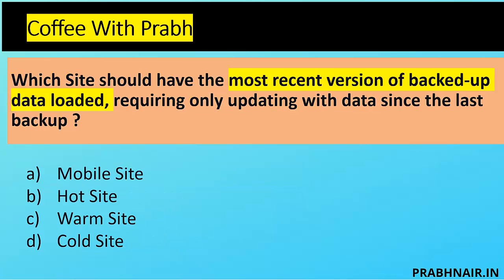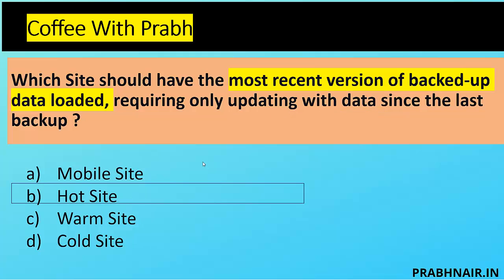Next: which site should have the most recent version of backup data loaded and requires only updating with data since the last backup? Cold site and warm site are removed because in those cases the server is also not there. Mobile site is already active — it is basically a site mobile from one location to another but there's no data. In a hot site, we already have data — we just need to update with the most recent data and make it operational. Hot site is active-passive because it doesn't have the most recent data. The answer is B — hot site.